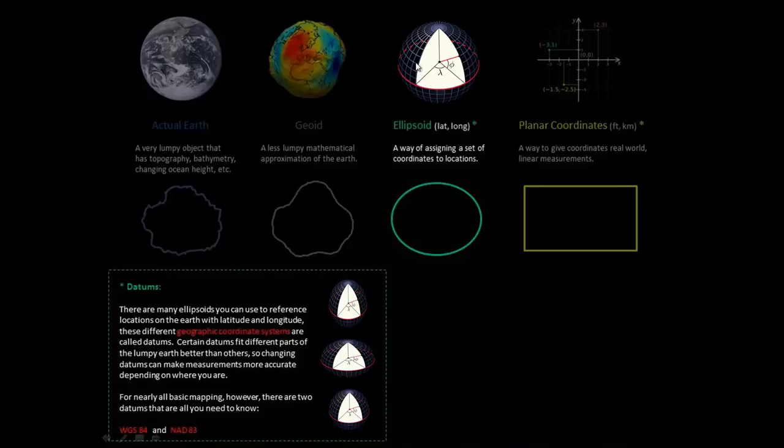The only other one that you'll encounter a lot is NAD83, and that's a different ellipsoid, a different datum that tries to fit North America as best as it can. So it's a little bit more accurate for North America than WGS84 is, but it's called the North American datum, and it was done in 1983.